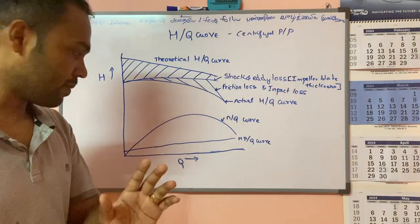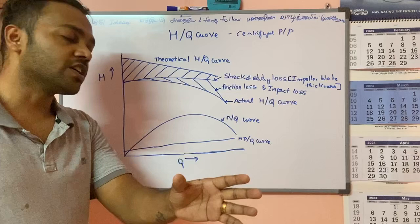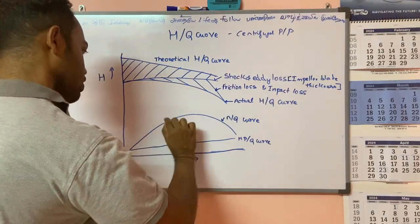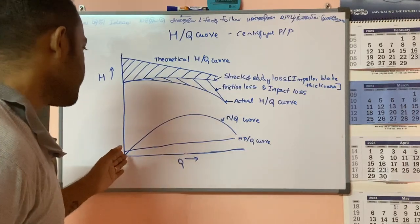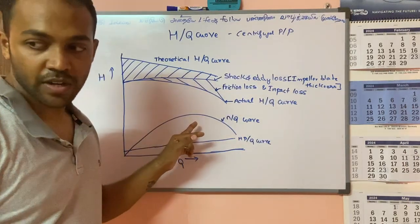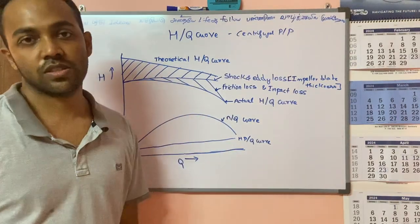And the efficiency curve is this convex curve. The efficiency is maximum at this point, which happens between the minimum and maximum throughput conditions.